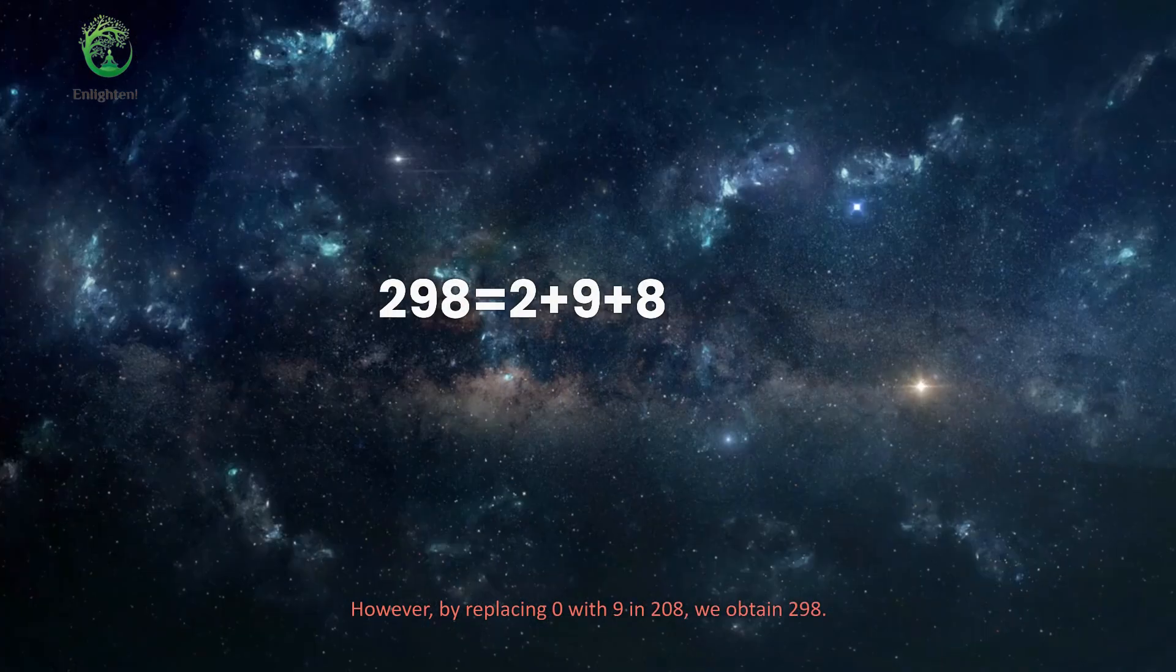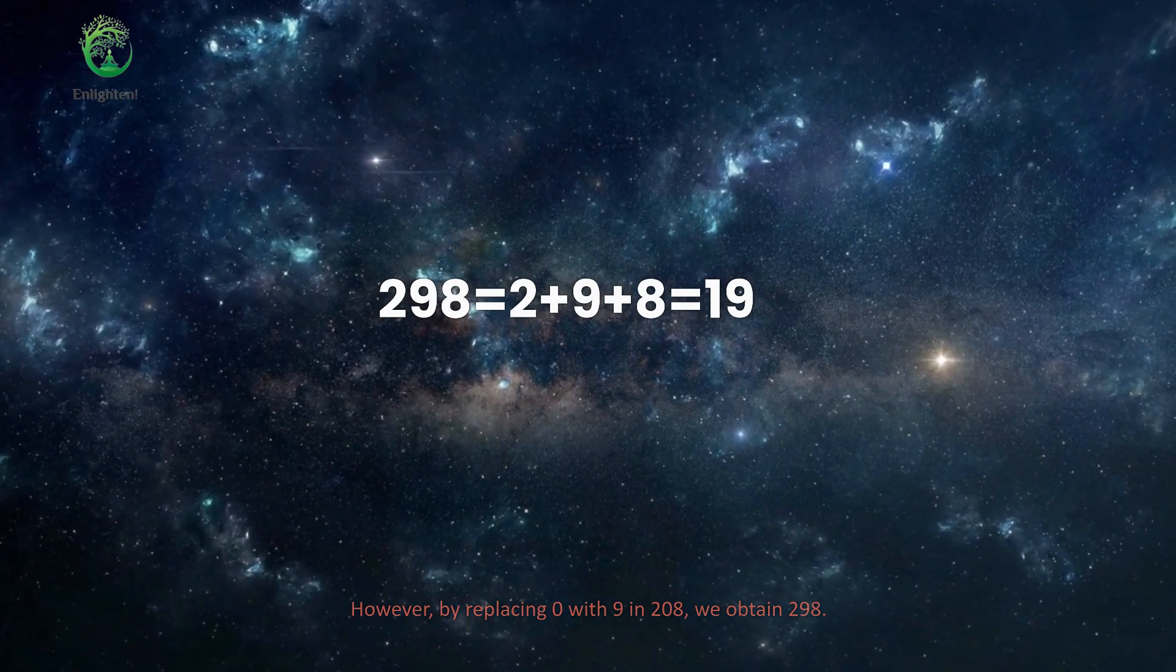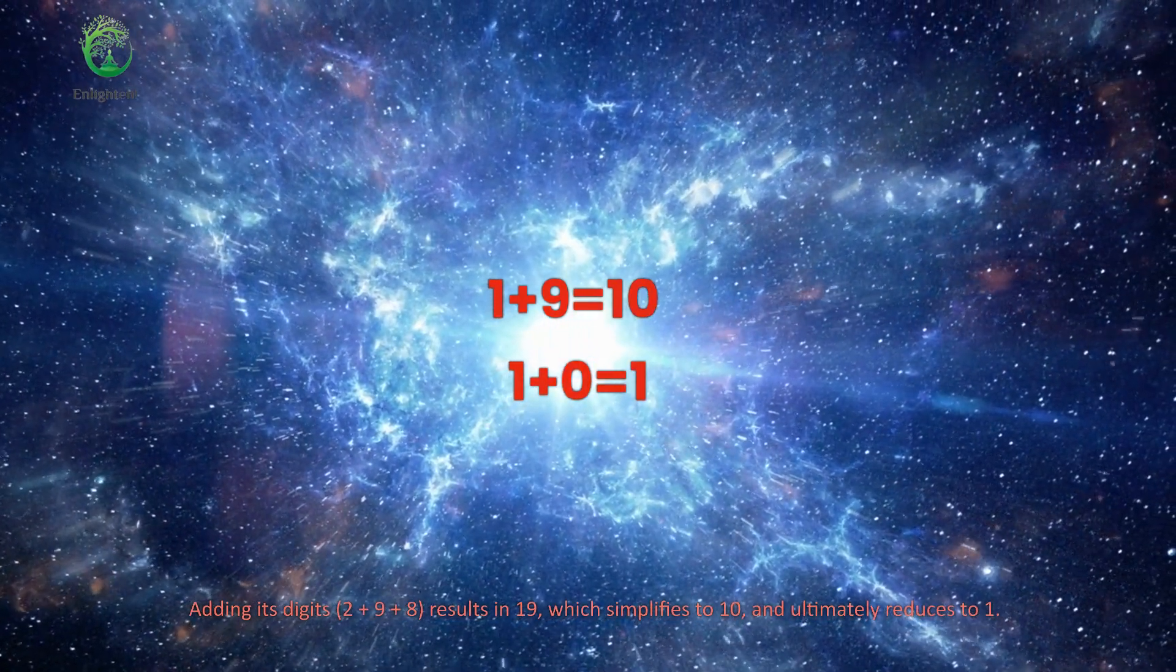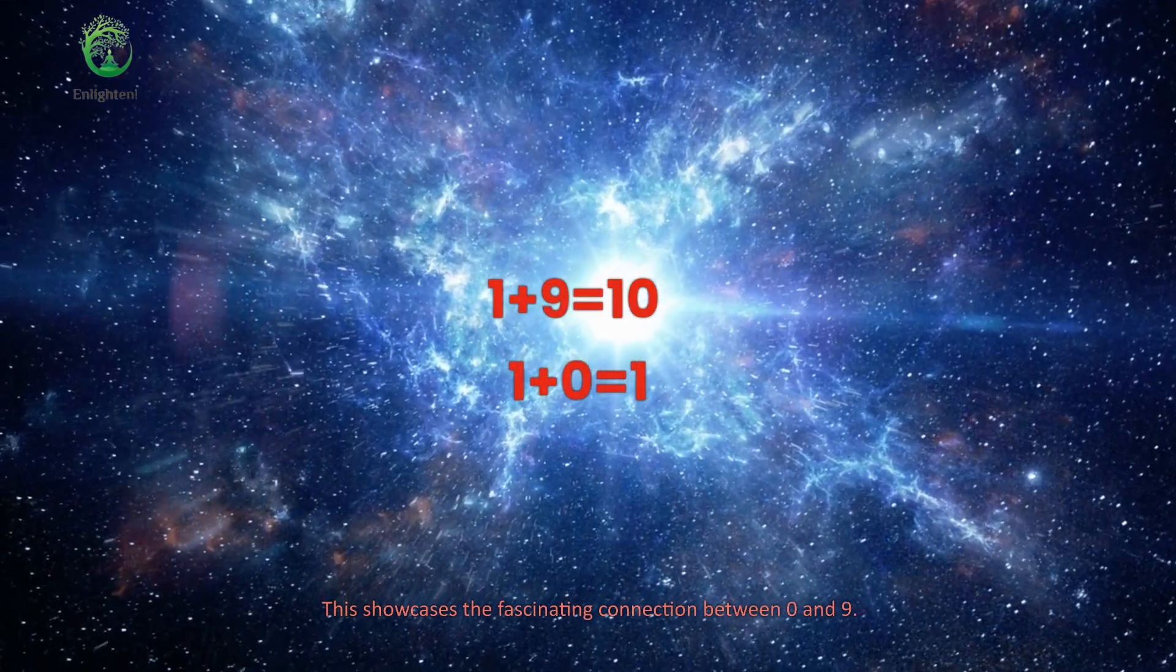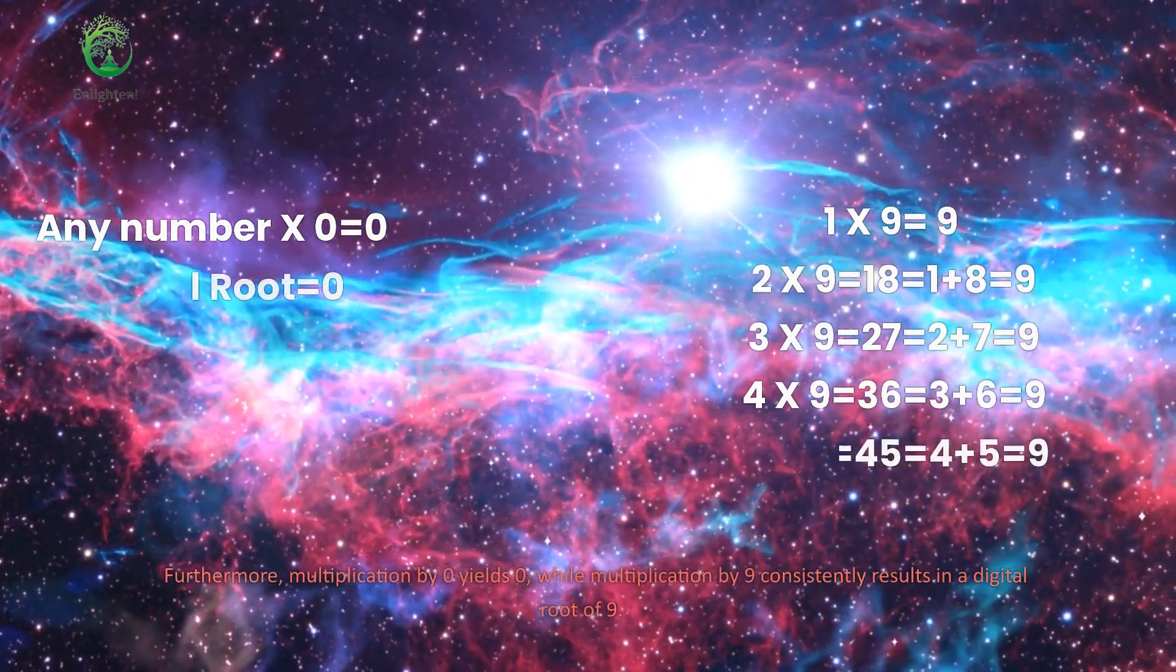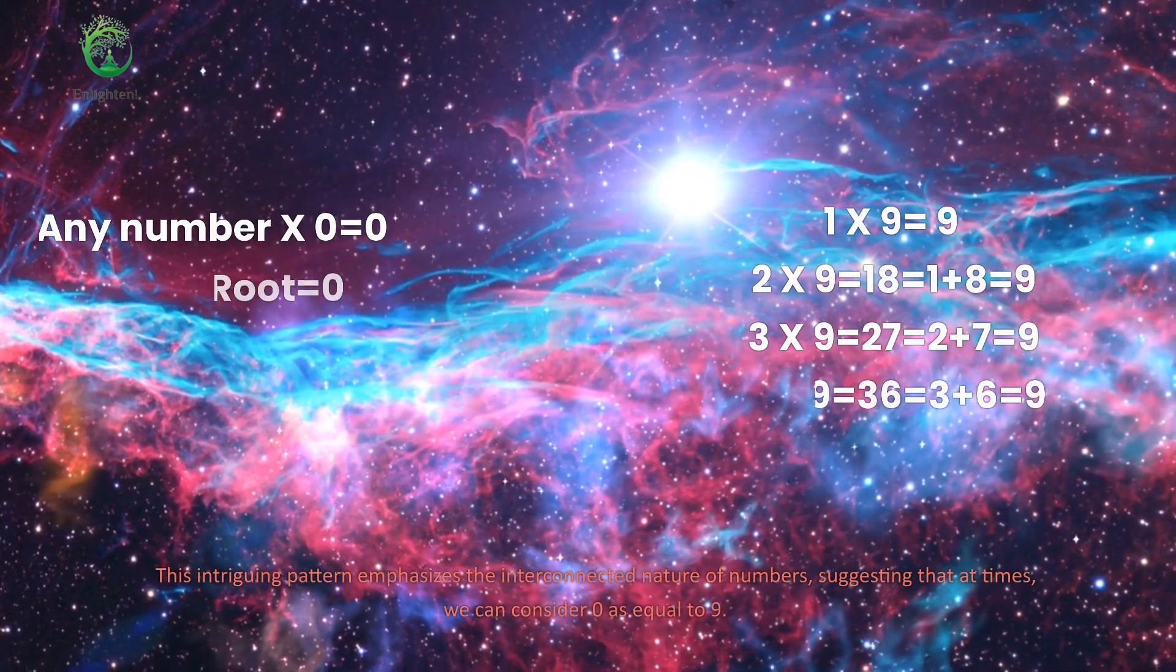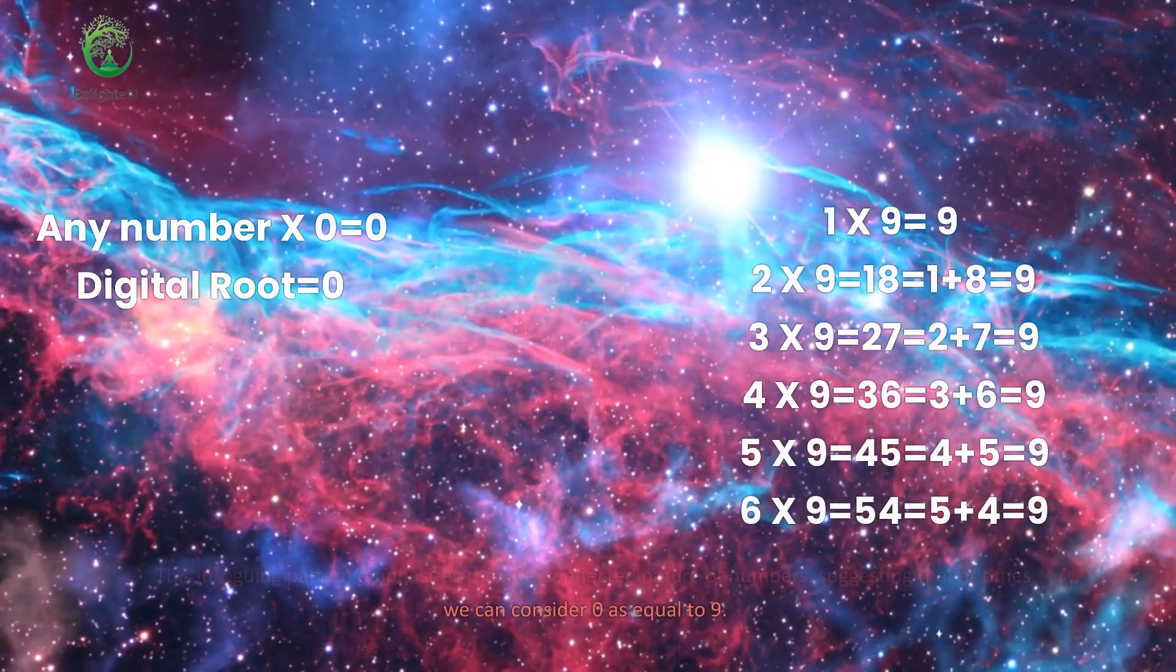However, by replacing 0 with 9 in 208, we obtain 298. Adding its digits, 2 plus 9 plus 8, results in 19, which simplifies to 10, and ultimately reduces to 1. This showcases the fascinating connection between 0 and 9. Furthermore, multiplication by 0 yields 0, while multiplication by 9 consistently results in a digital root of 9. This intriguing pattern emphasizes the interconnected nature of numbers, suggesting that at times, we can consider 0 as equal to 9.